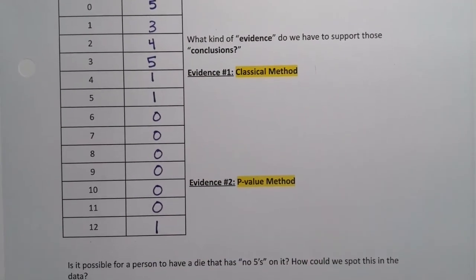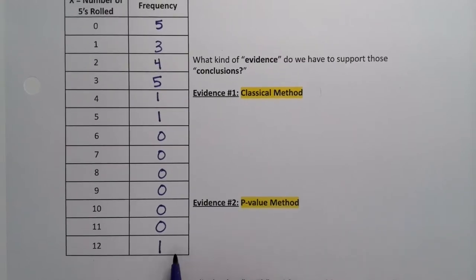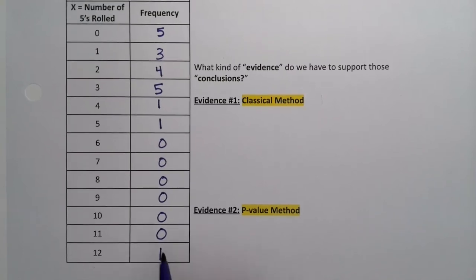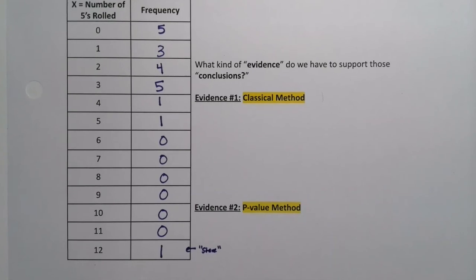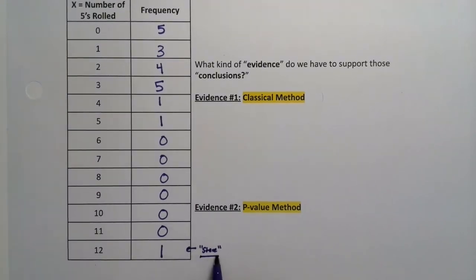You thought I was going to put a 0 in there, didn't you? But I didn't. This was a student who got all 12 fives. So when they rolled, it was just 5, 5, 5, 5, 5, 5, 5 every time. So this was a student we're going to call Steve. Steve had those results. Actually, I'm going to put that, I'll leave it there.